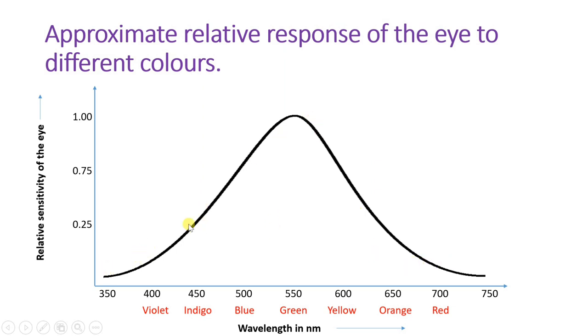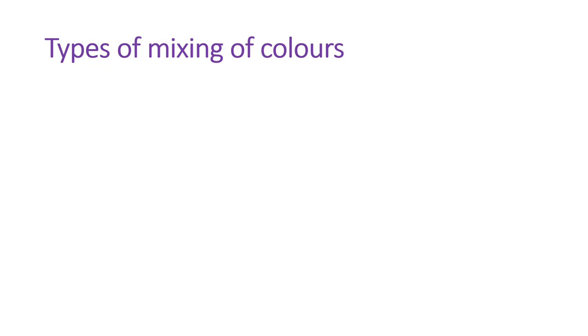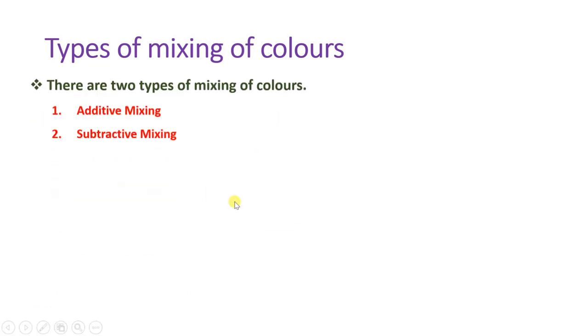Based on this sensitivity we can generate multiple colors, and to understand that we need to understand different types of mixing of color. There are basically two types: additive mixing of color and subtractive mixing of colors.